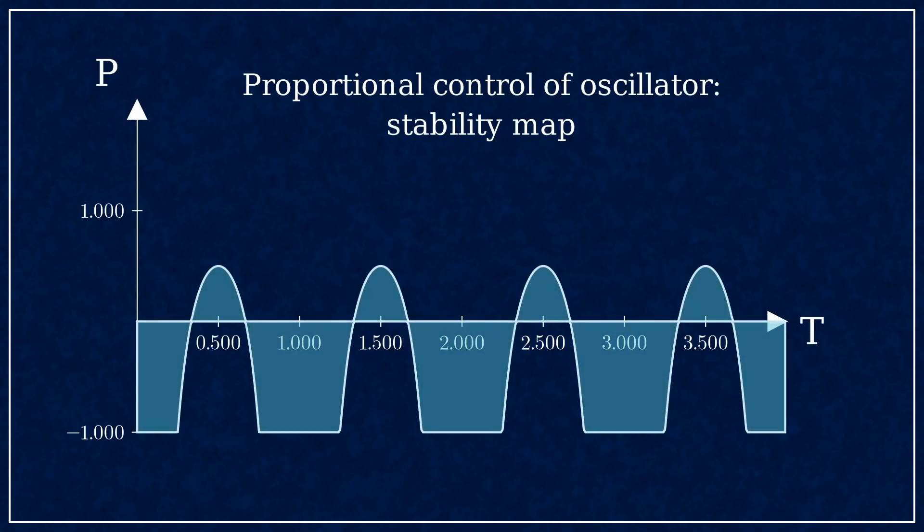Hello Internet! This is the stability map of a proportional controller applied to an oscillator. It is a function of sampling time and gain, and the sampling time is relative to the oscillation period of the plant.